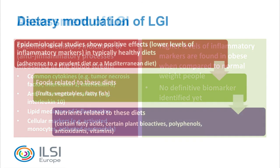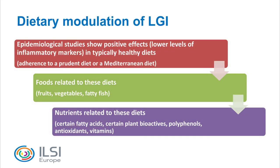Different foods, types of diets, and specific nutrients have an impact on inflammatory processes and on the biomarkers of low-grade inflammation. Healthier diets — such as adherence to a prudent diet or a Mediterranean diet, or higher intake of fruits, vegetables, and fatty fish — are associated with lower levels of inflammation. Specific fatty acids, plant-derived polyphenols, and antioxidant vitamins are also associated with lower inflammatory processes. Most of these associations have been demonstrated in epidemiological or cross-sectional studies; intervention studies have shown some anti-inflammatory effects but often failed to demonstrate them, perhaps due to short duration or small sample size.